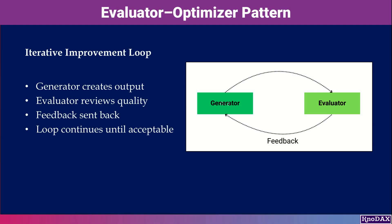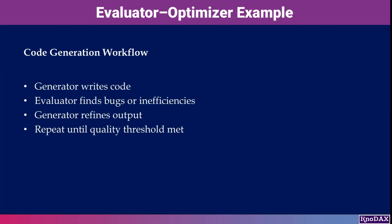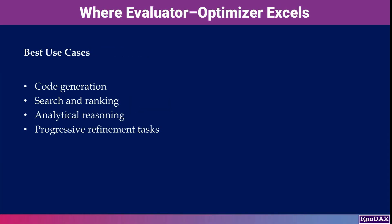A classic example is code generation with automated review — the evaluator identifies bugs or inefficiencies and the generator iterates until the result is acceptable. This pattern is especially useful for code, search, analysis, and reasoning tasks that benefit from progressive refinement rather than one-shot generation.